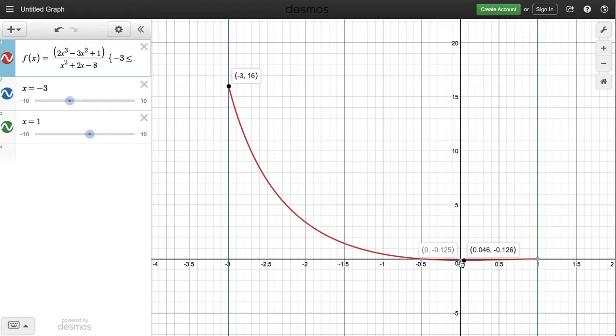Now, I know it's a tight, small difference between negative 0.125 and negative 0.126. But I think you'll agree that that is the lowest of those y values. And so I've quickly located the maximum, which occurs at negative 3, but the value is 16. And the minimum, which occurs at 0.046, the value of the minimum is negative 0.126. That's the lowest y value on that red curve.